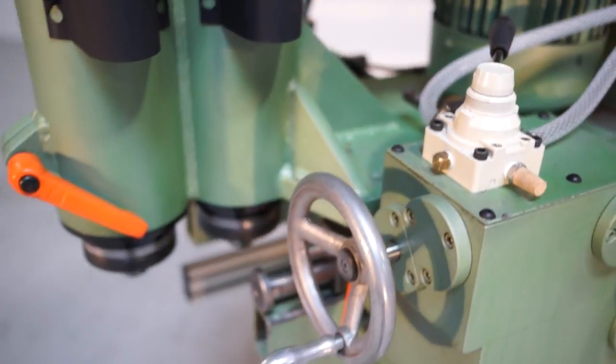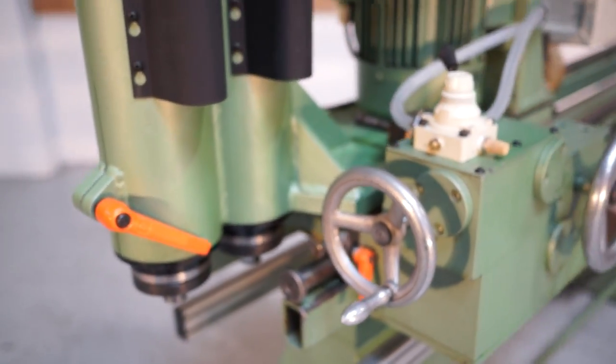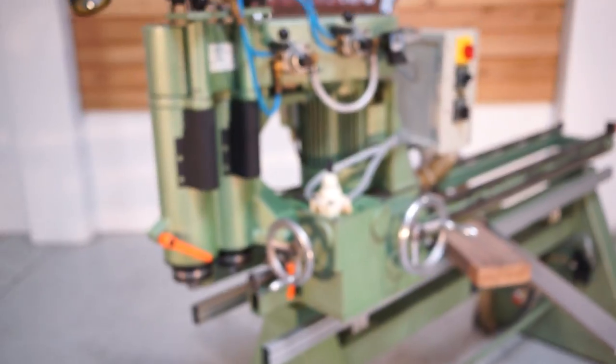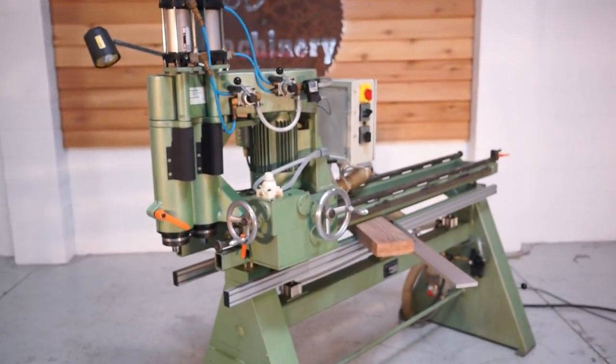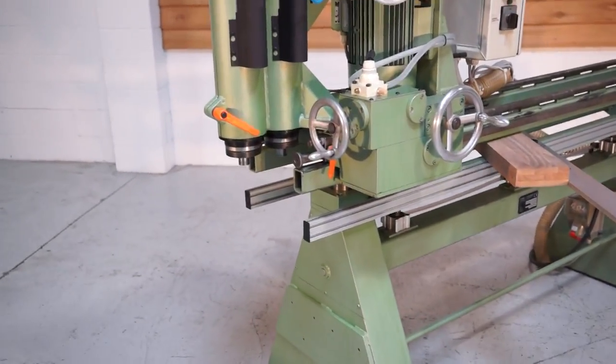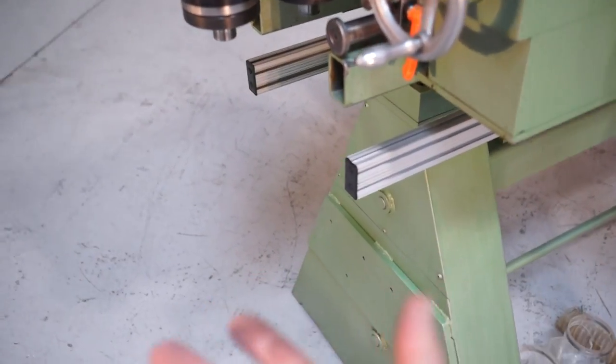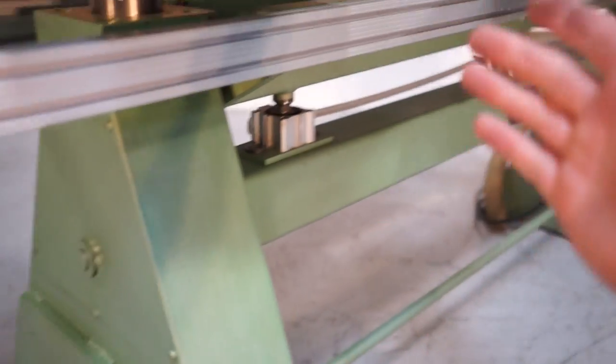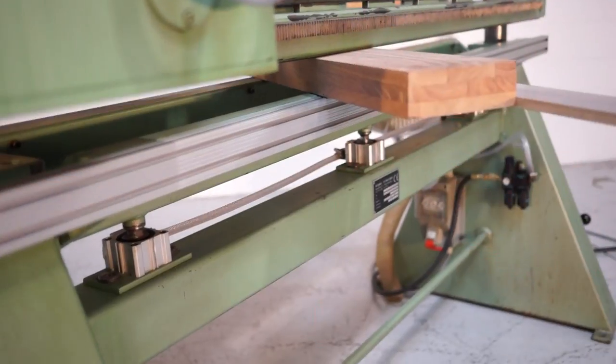It has two counter-rotating spindles, and as you can see we have drastically changed this machine up a little bit. Now it can bore off the end. So now you have an open space to the floor. You're no longer stuck between the two jaws.